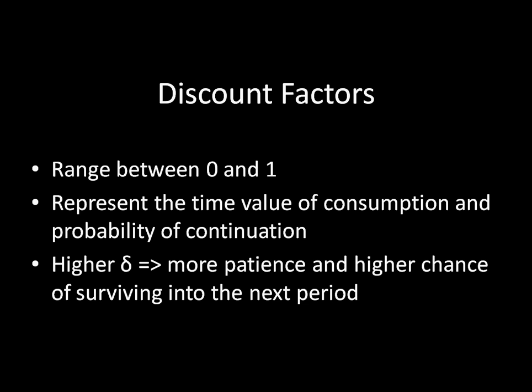Discount factors represent the time value of consumption and the probability of continuation. Notice that it's a value between 0 and 1, so that's a probability. In the simplest sense, you can think of delta, this discount factor, as representing the probability of reaching the next stage in every single period. Higher values of this discount factor correspond to more patience from an individual and a higher chance of surviving into the next period.